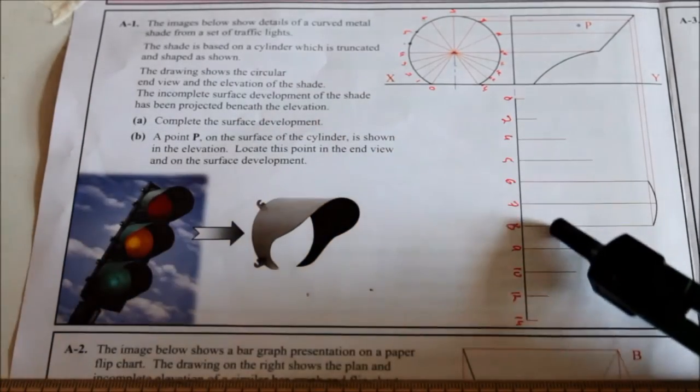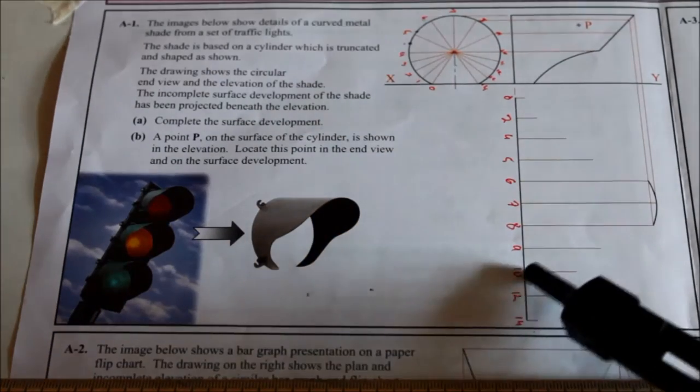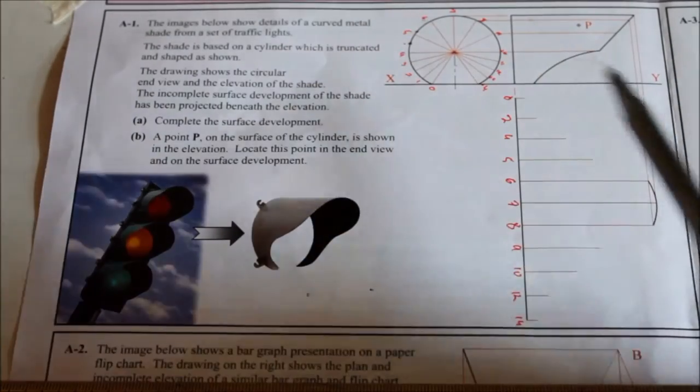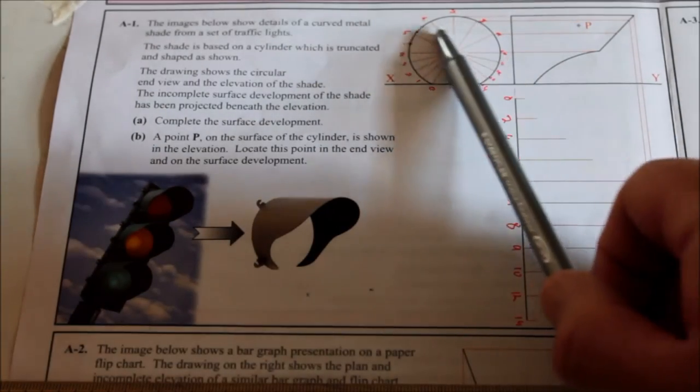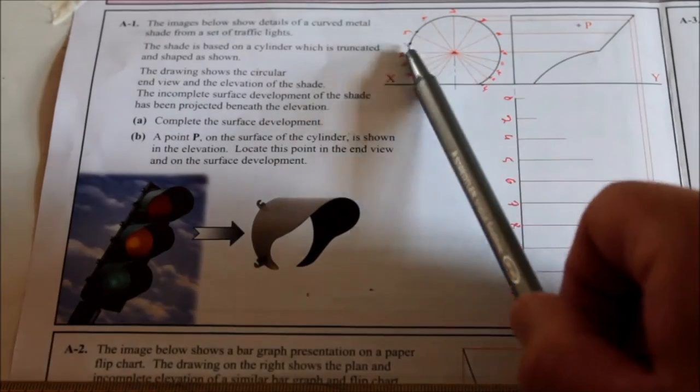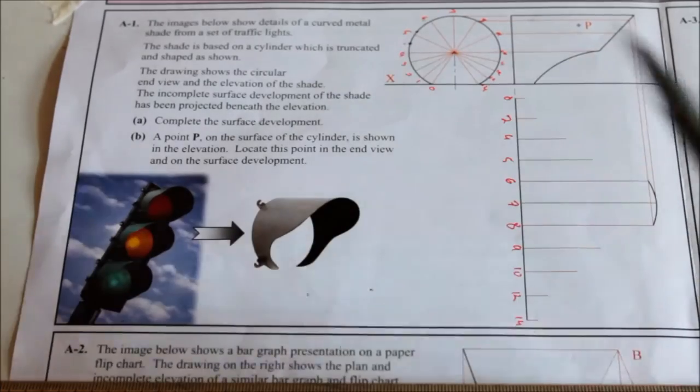You see here they brought seven across, found the height for seven—that's point seven. Brought across the height for eight and six, and so on. They've done the same for five and two. So let's put in the rest now.